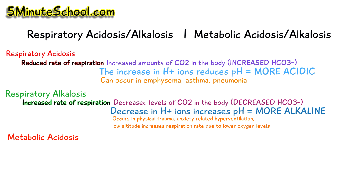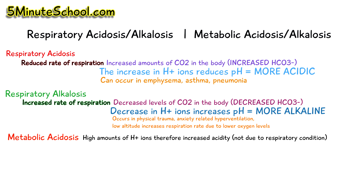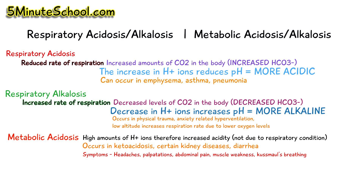Metabolic acidosis is where we have high amounts of hydrogen ions in the body, but it's not due to a respiratory condition. This could occur in those who have untreated diabetes and have ketoacidosis. It can also occur in certain kidney diseases and in certain diarrhea cases because of an altered fluid balance.